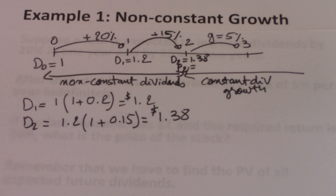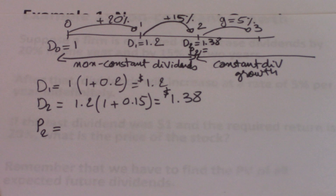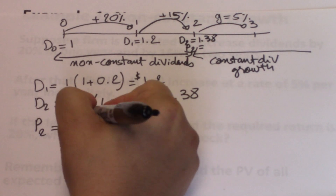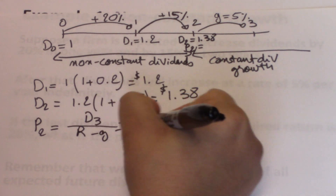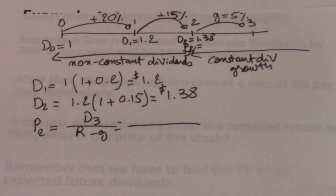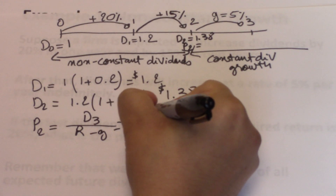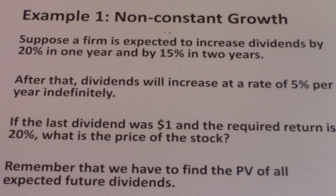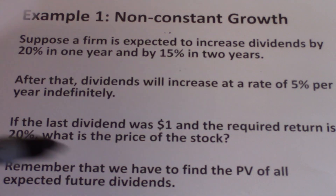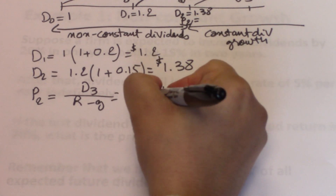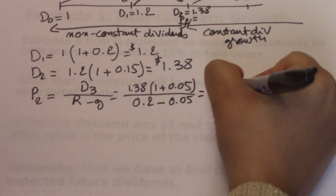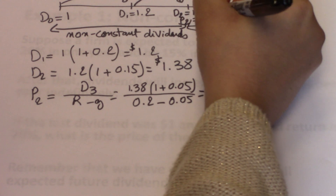The constant dividend growth model says price equals the next dividend divided by R minus G. So P2 equals D3 divided by R minus G. D3 is D2 of 1.38 multiplied by 1 plus 0.05. R is the required return of 20%, so R = 0.2, and G = 0.05. This gives us P2 = $9.66.